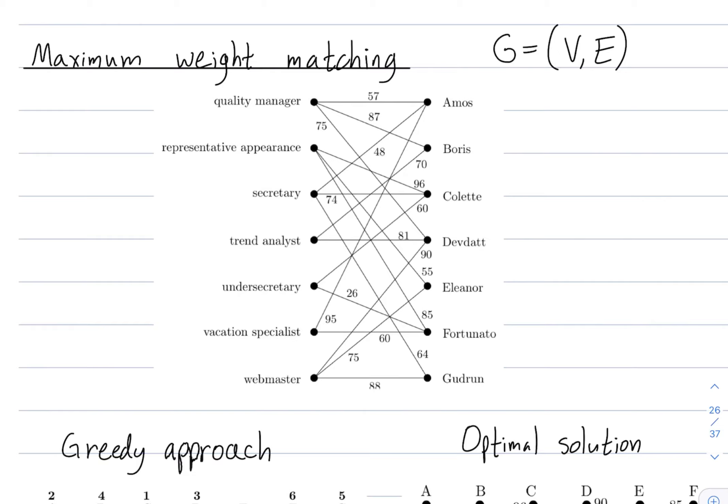Alright so pretend we have a bipartite graph. That means in our graph the vertices can be divided into two sets. The first type of vertices and the second type of vertices. And all of the edges in our graph go from one type of vertex to the other type. So you never have an edge between vertices of the same type.